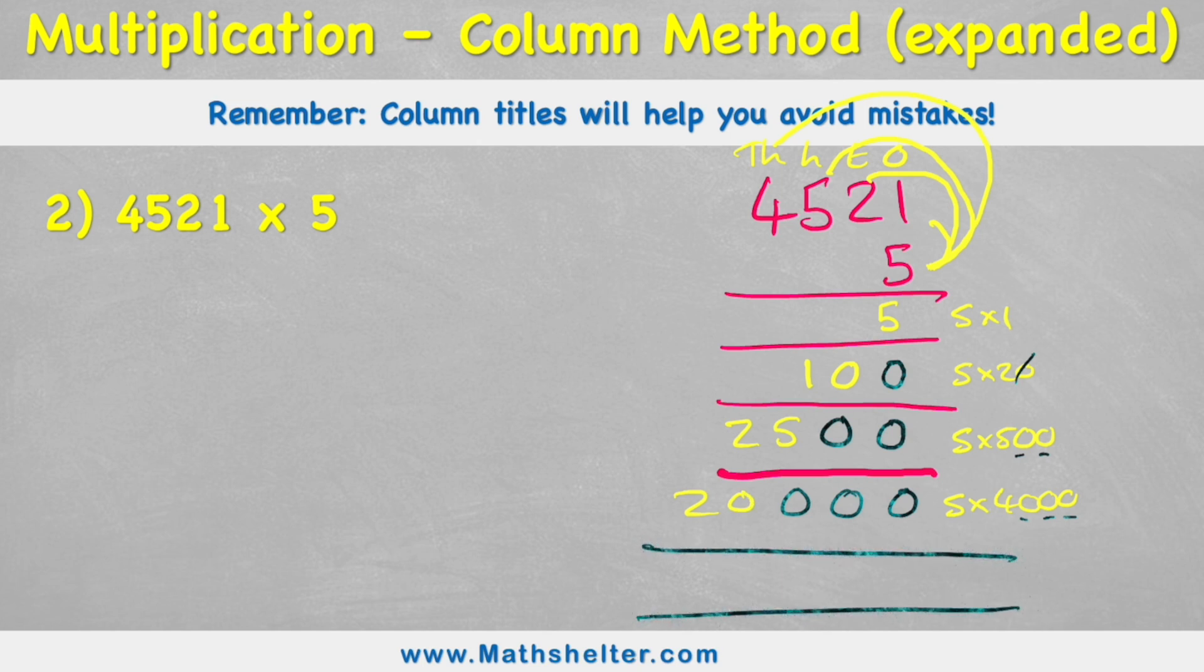So now I can just simply add it up in these columns. So in my ones, I have a five. In my tens, I have zero. In my hundreds, I've got this one, five, and then zero. So I have six. In my thousands, I have two. Ten thousands now, I have another two. So my answer to 4,521 times five is 22,605.